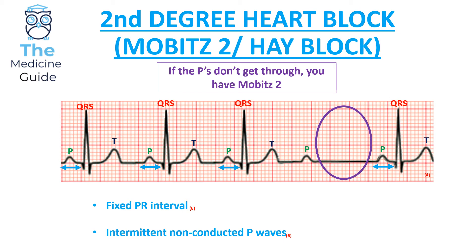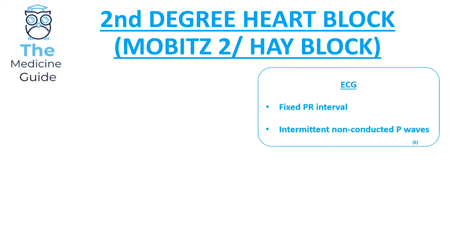The mnemonic I use is: 'if the P's don't get through, you have Mobitz type 2.' Not all P waves are followed by a QRS complex — in this case it's the fourth P wave which isn't followed by a QRS complex. The key difference between Mobitz type 2 and Mobitz type 1 is that in Mobitz type 2, the PR interval is at a fixed constant rate — it is not becoming progressively longer.